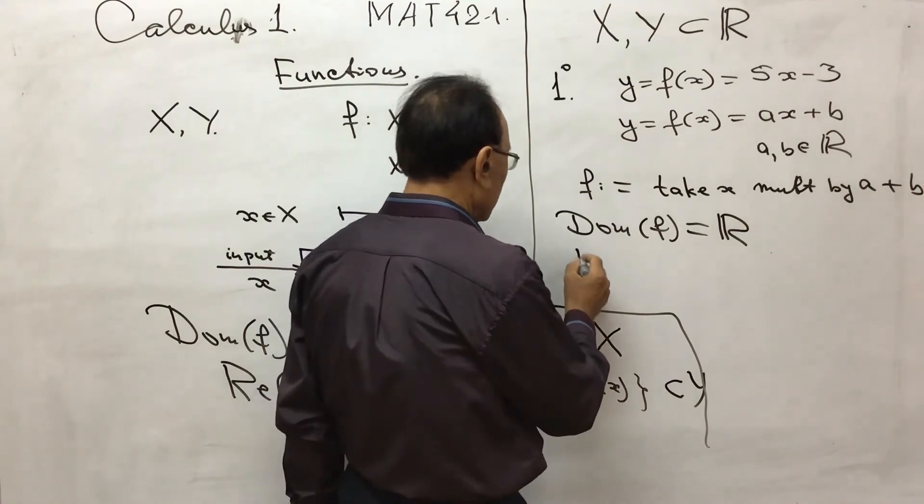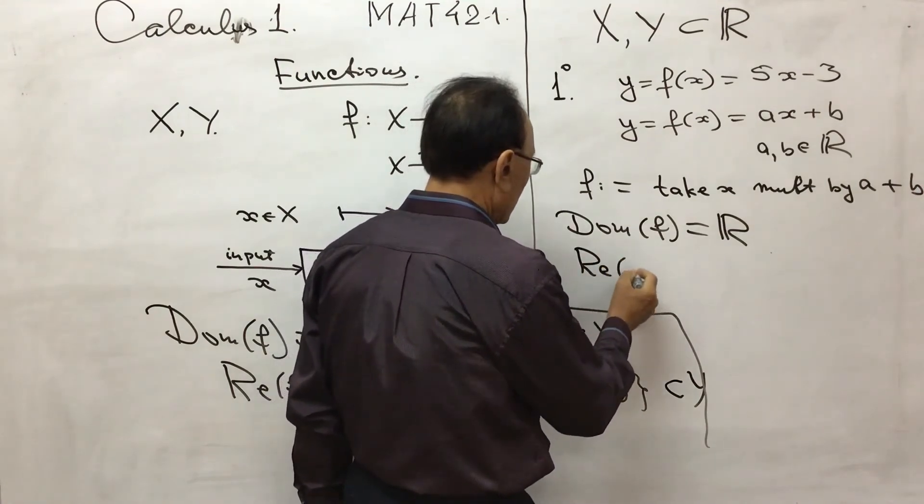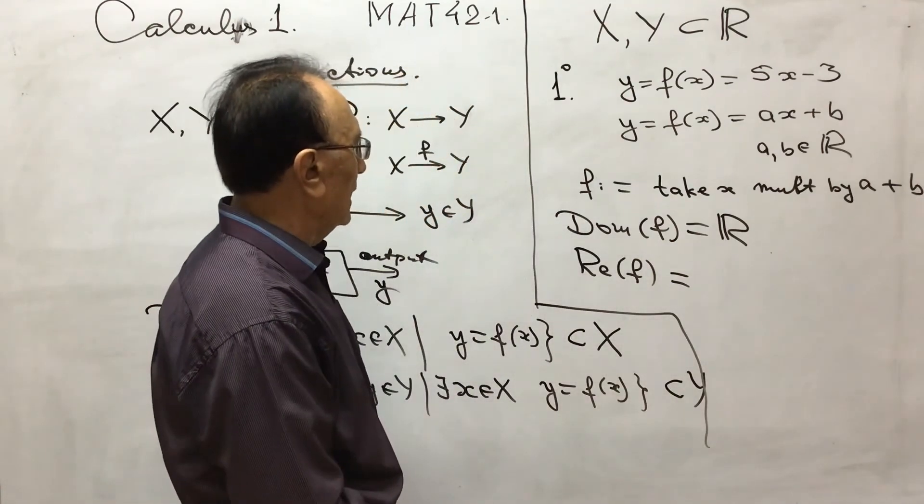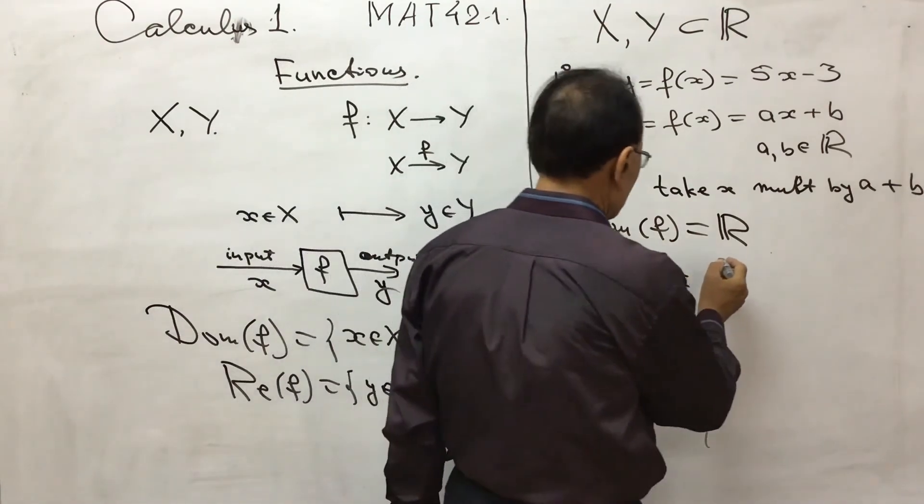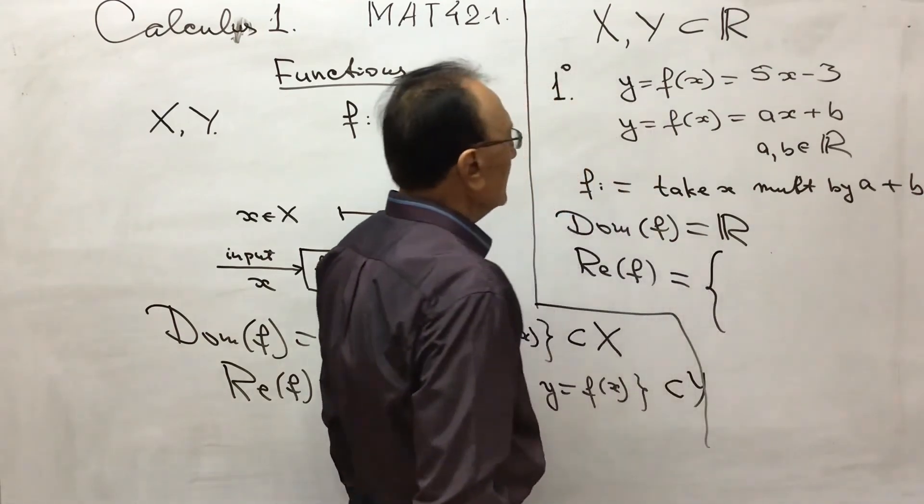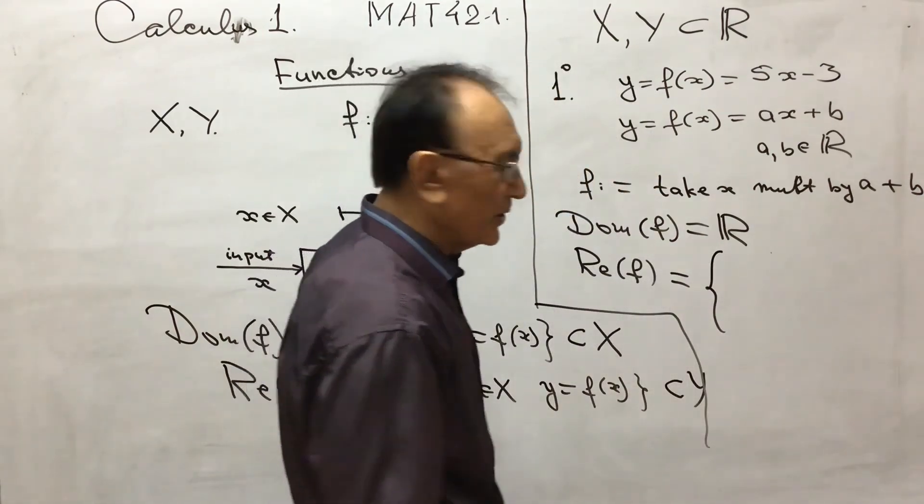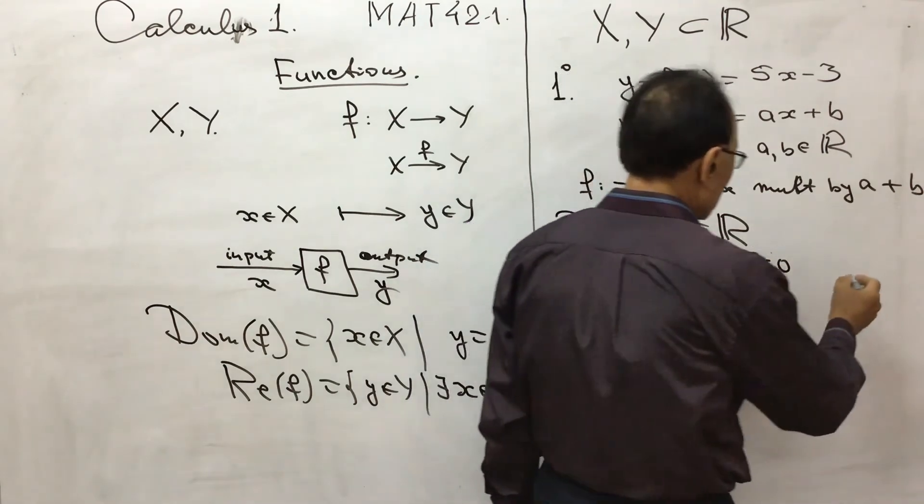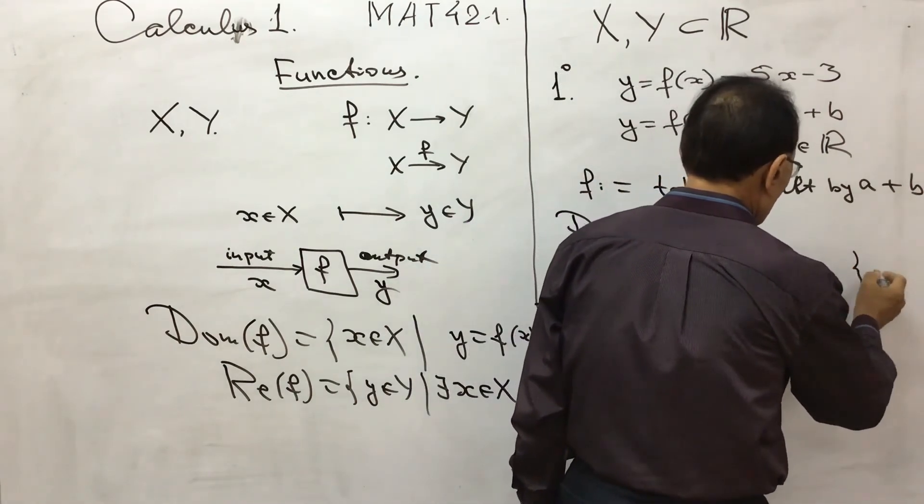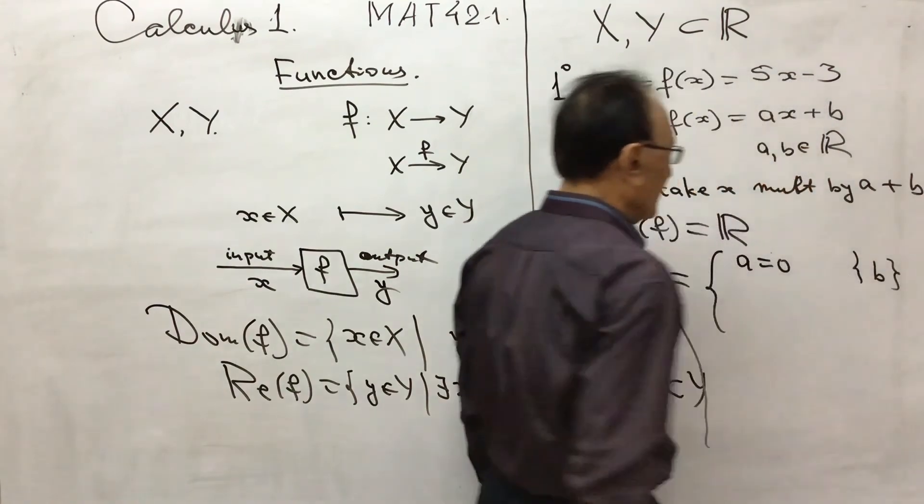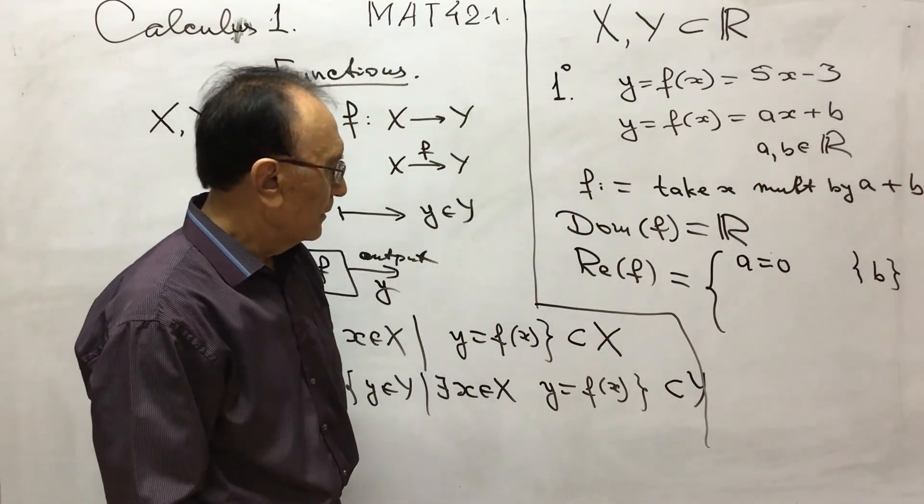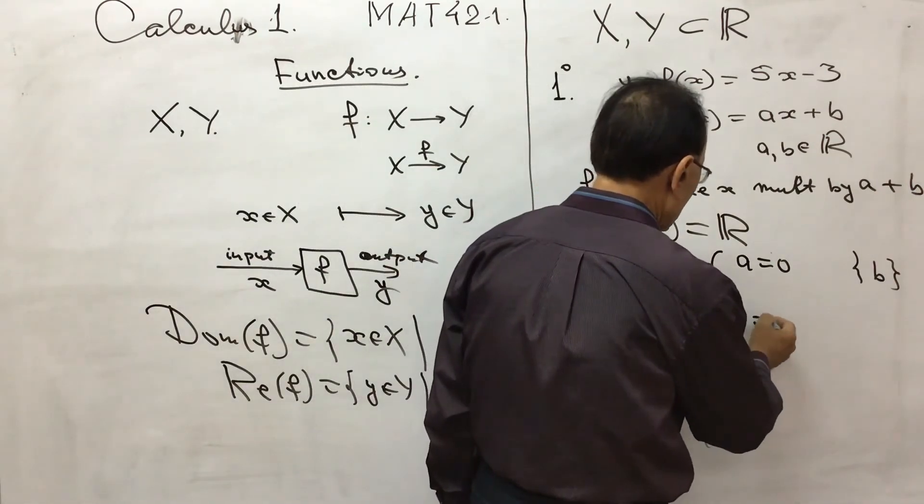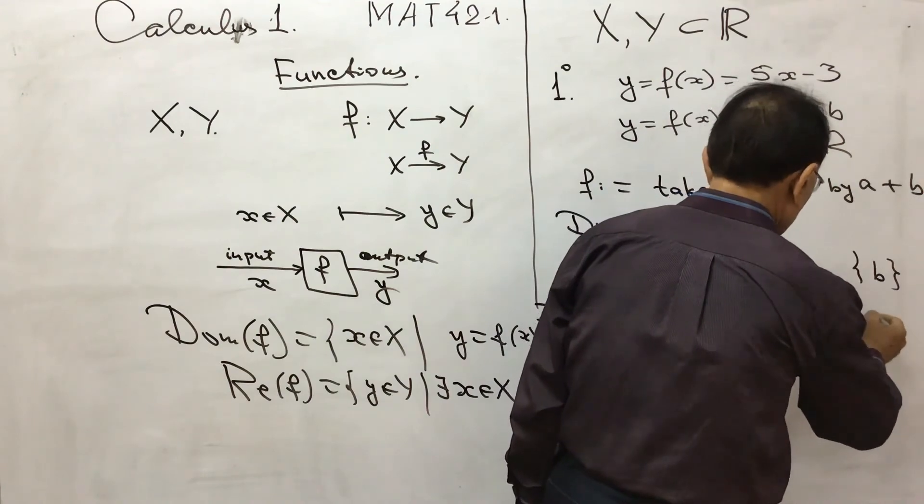So how about the range? The range of f. Now the range of f depends for a to be zero or not zero. If a is zero, then the range is only one point b, a single point set. If a is not zero, then it is just R.